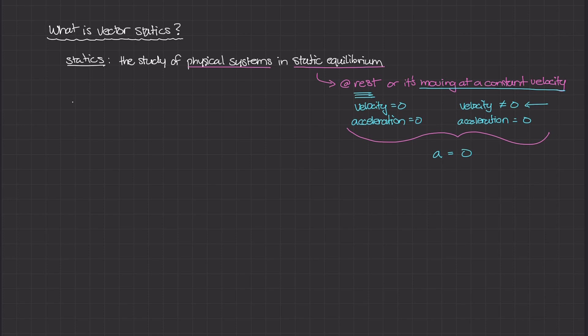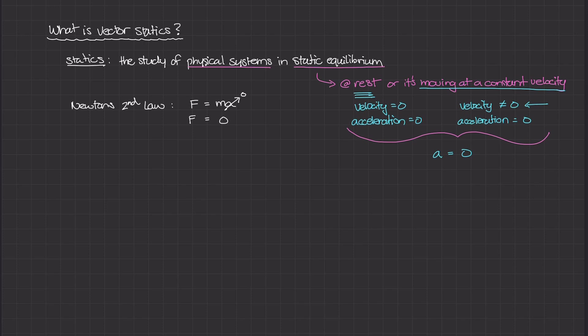If you're familiar with Newton's second law, the general definition is F = ma — you have a mass body experiencing some acceleration, and forces acting on that object. If we're studying a system in static equilibrium where the acceleration is zero, then this formula becomes F equals zero — the forces are equal to zero.